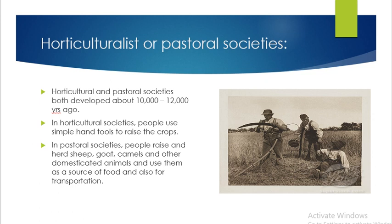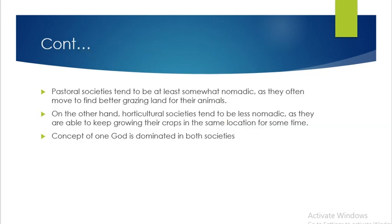In horticultural societies, people raise herd animals such as sheep, goats, camels and other domesticated animals, using them as a source of food and also for transportation. Pastoral societies tend to be at least somewhat nomadic as they often move to find better grazing land for their animals. On the other hand, horticultural societies tend to be less nomadic as they are able to keep growing their crops in the same location for some time.